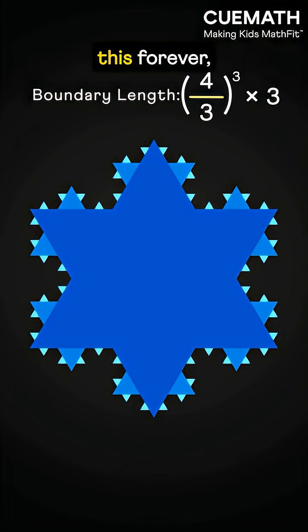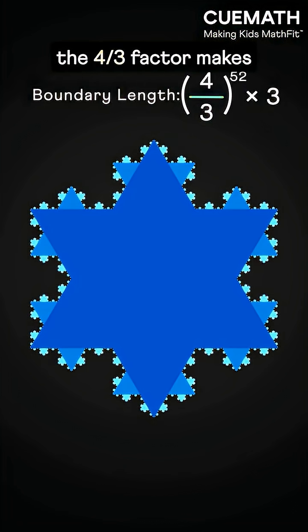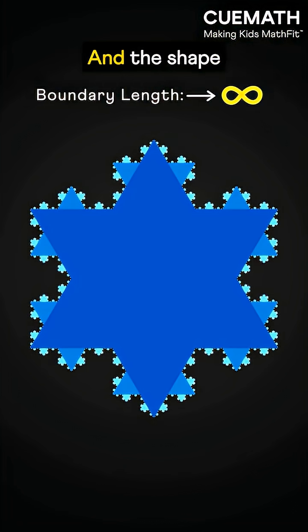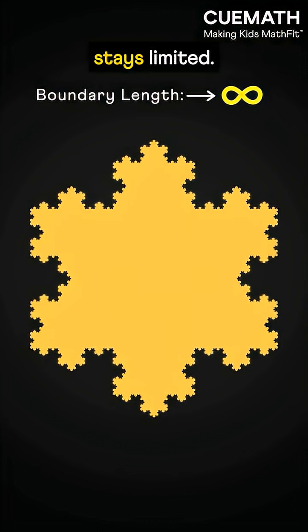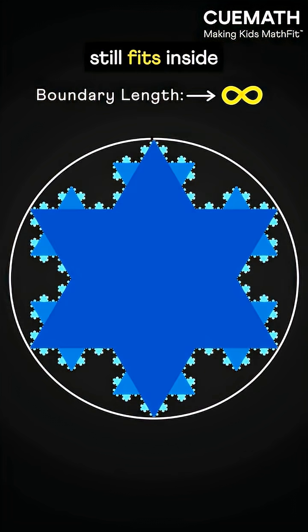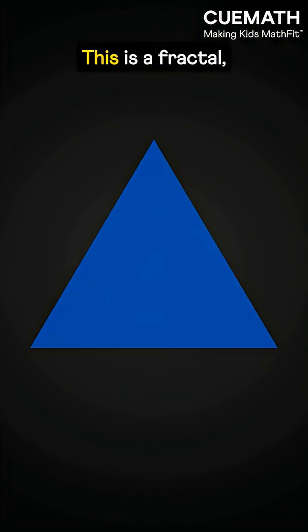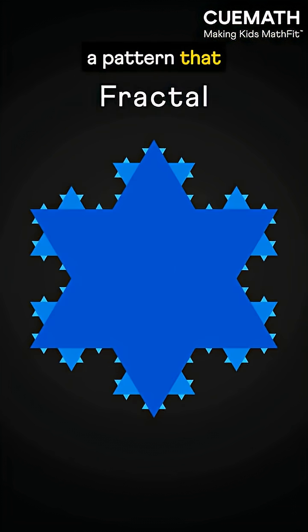If you keep repeating this forever, the four-thirds factor makes the total boundary length infinite and the shape becomes a snowflake. But the area inside stays limited. The whole shape still fits inside a circle. This is a fractal, a pattern that repeats endlessly.